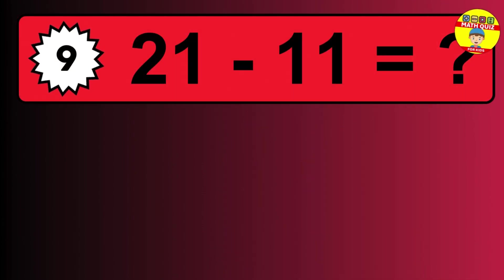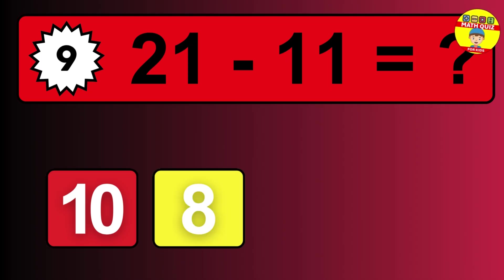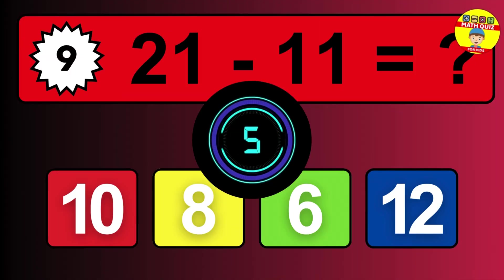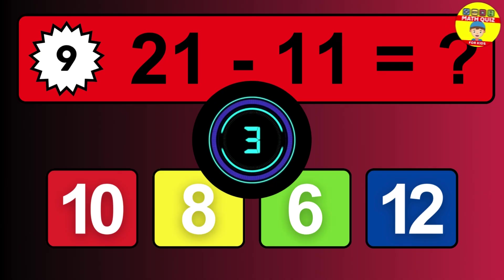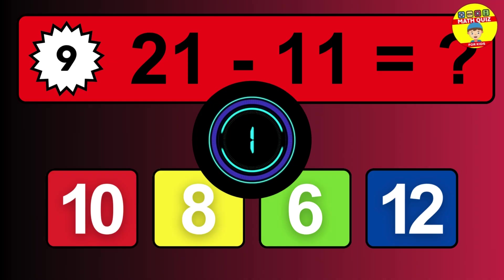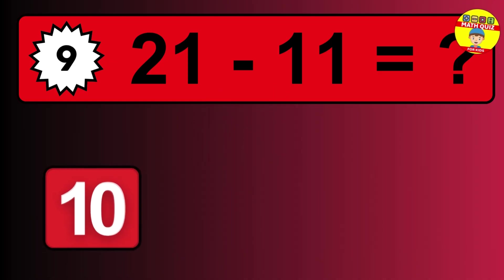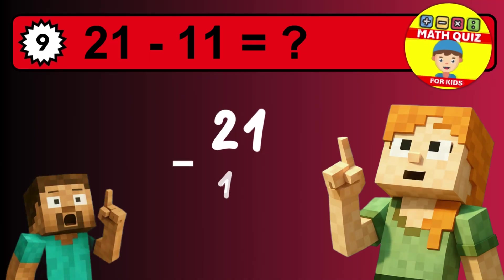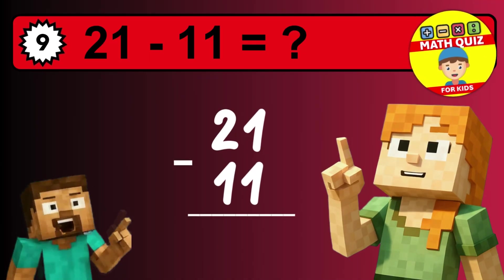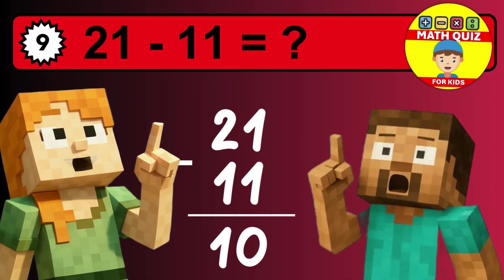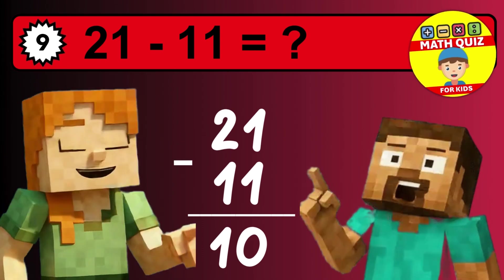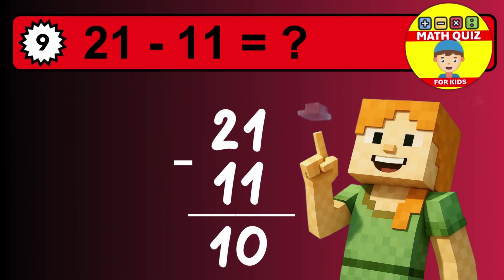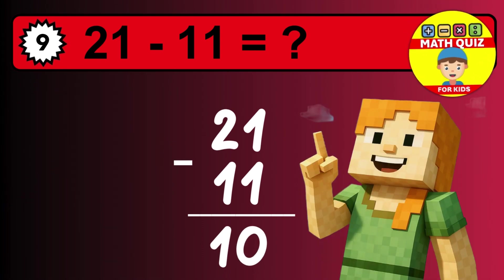What is 21 minus 11? Time to think. Let's solve this step by step. We start with the units: 1 minus 1 is 0. Then we go to the tens: 2 minus 1 is 1. The final answer is 10.